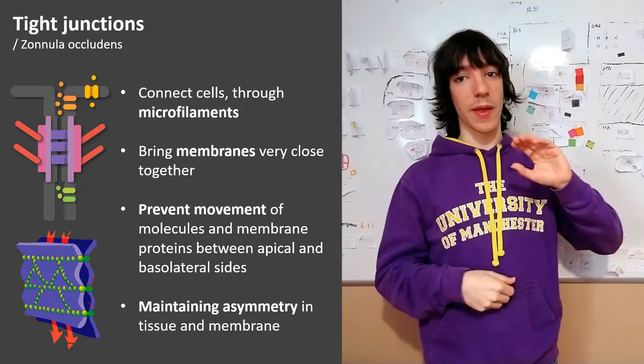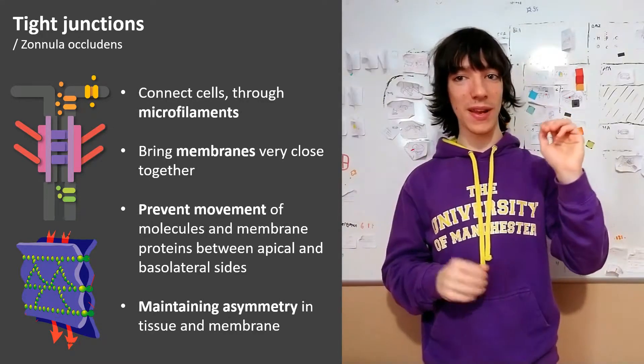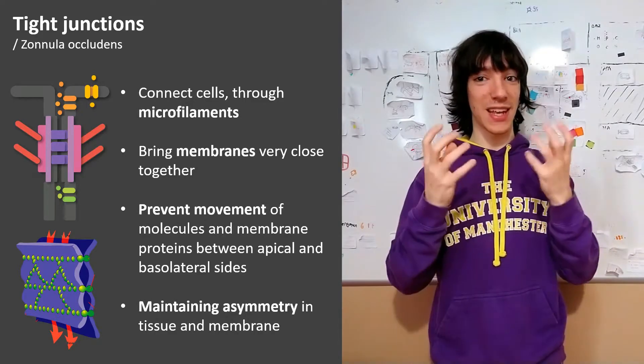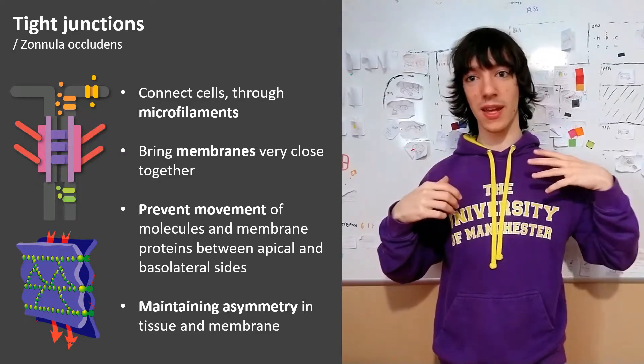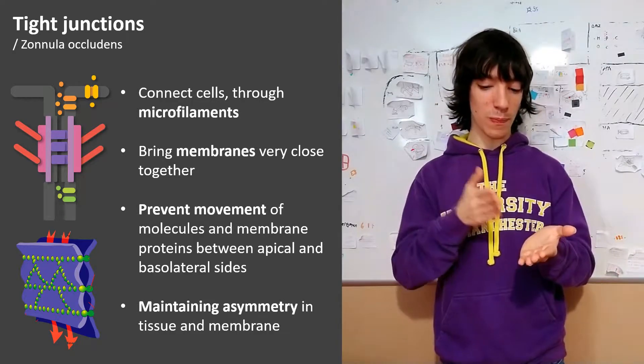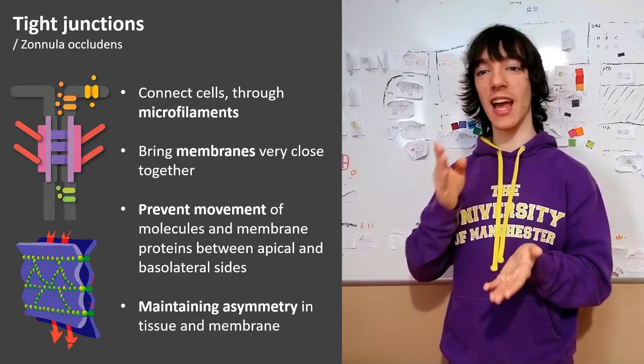For example, the apical side would be looking to the lumen, the interior of the intestine, taking nutrients up, and the basal side would be looking to the capillaries, to pass them the nutrients that they had captured.